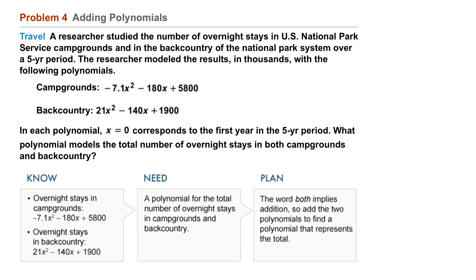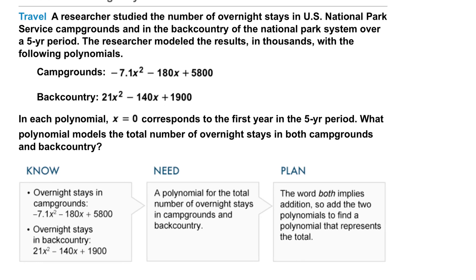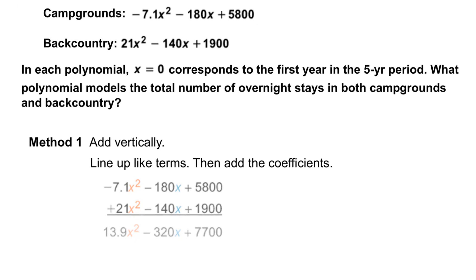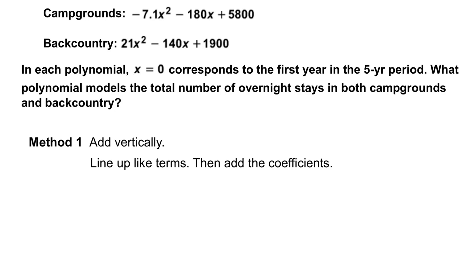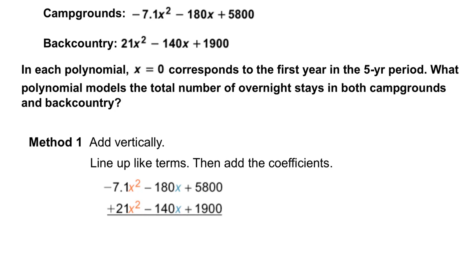Your plan: the word 'both' implies addition, so add the two polynomials to find a polynomial that represents the total. Method one — we can add vertically, so we line up like terms. Notice the x squared terms on the left, the x terms, and then the constants, and then we add the coefficients.